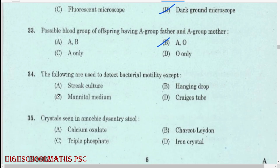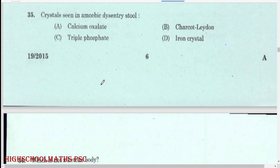The following are used to detect bacterial motility except: stab culture. Crystal seen in amoebic dysentery stool: Charcot-Leyden crystals.